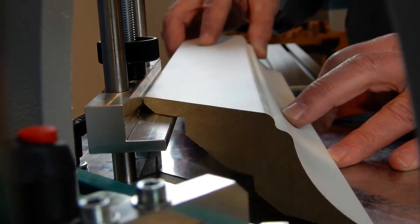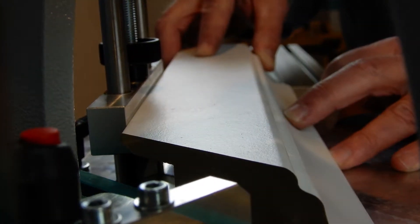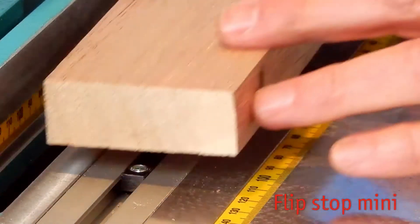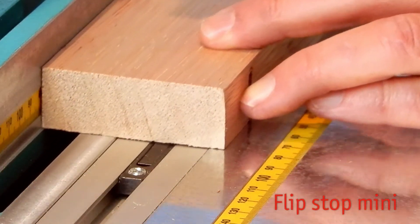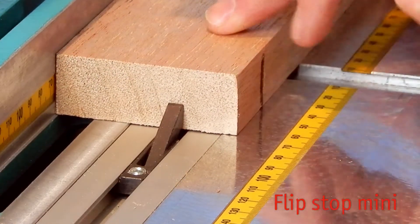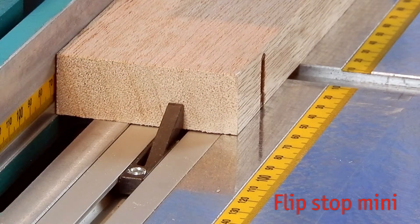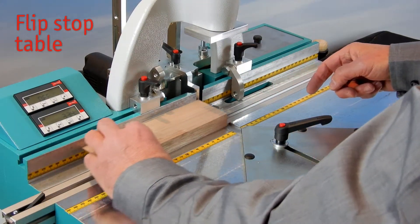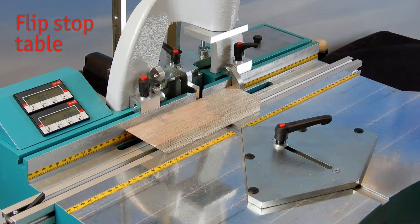It is adjustable from 30 to 70 millimeters in supporting height. The flip stop mini disappears in the rail when not needed. Nice and easy and still accurate, for left or right side within the machine table. Perfect for repeated accuracy.